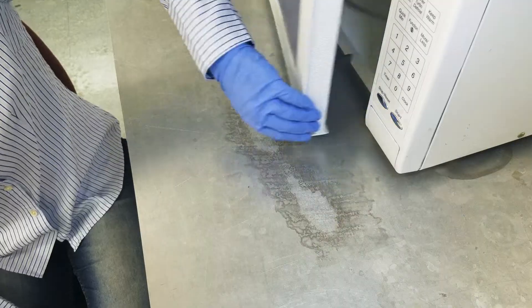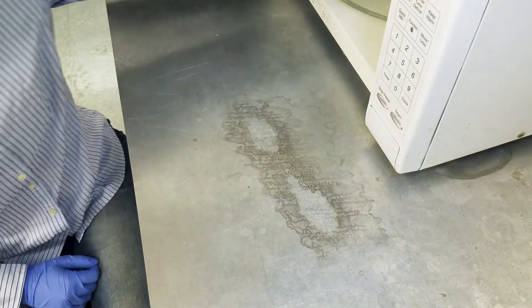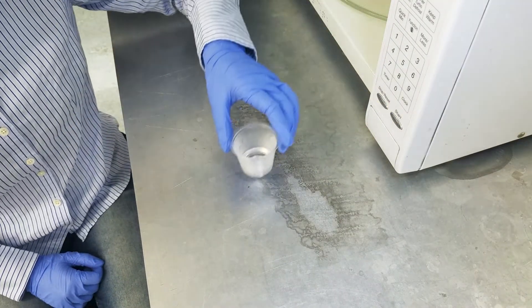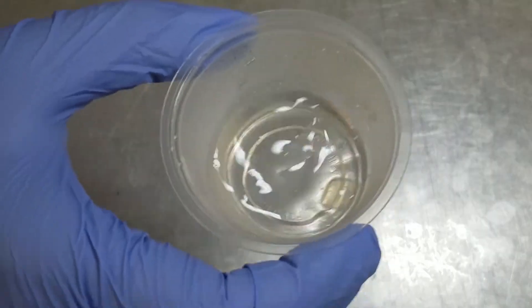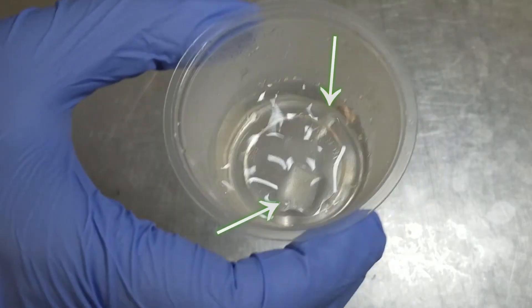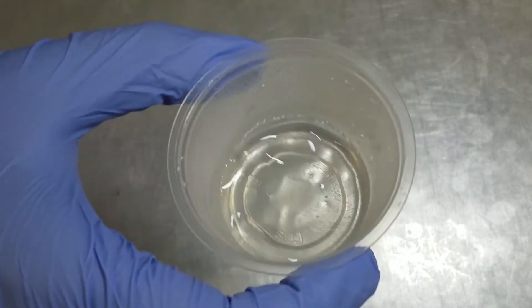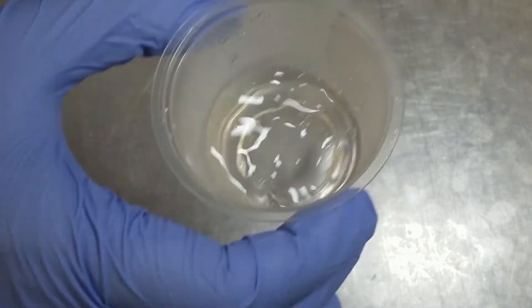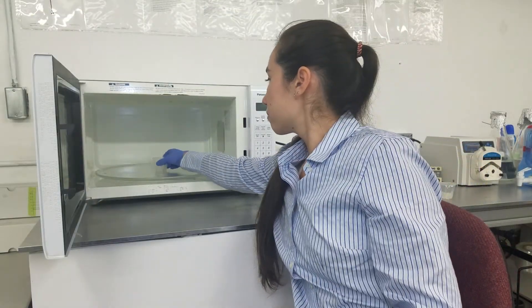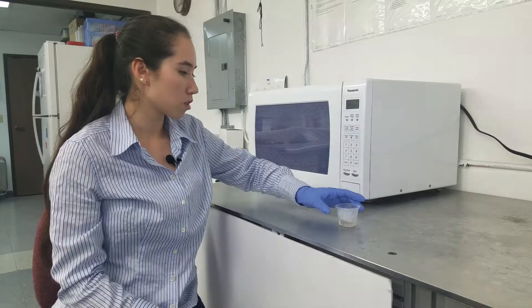Now we're going to check on our gel cup. Take out the cup and swirl while checking for any unmelted pieces of agarose. Look carefully as they can be transparent. If there are any small chunks, put the gel cup back into the microwave for another 5 seconds. Swirl and check again.